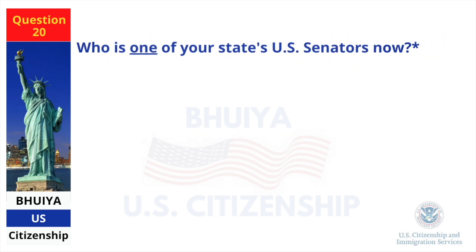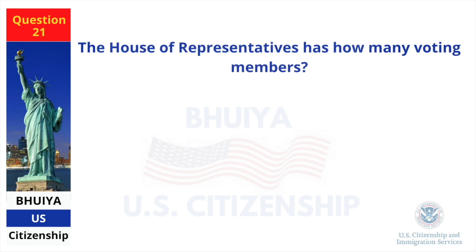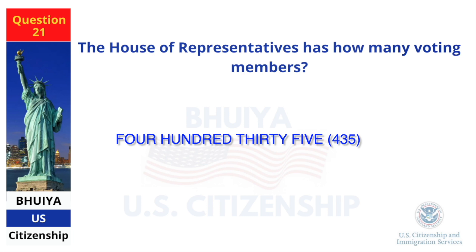Who is one of your state's US senators now? This answer will vary. The House of Representatives has how many voting members? 435.